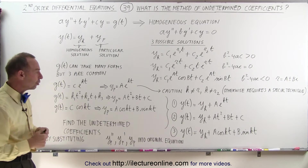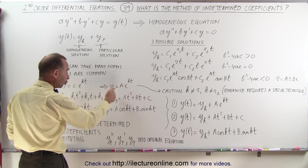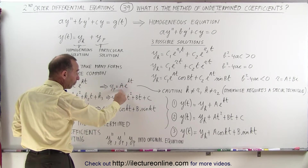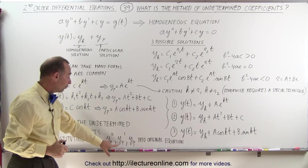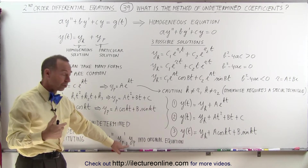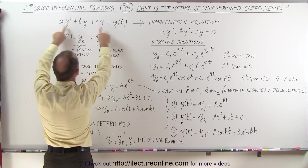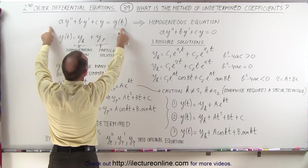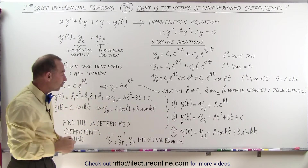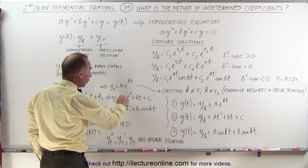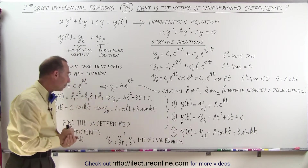How do we find those undetermined coefficients? We're going to take our particular solution in general form with the undetermined coefficients, find the second derivative, the first derivative, and plug those back into the original equation and set it equal to g of t. By doing that, we'll end up with linear equations that allow us to find the undetermined coefficients a, b, and c, as seen in these examples.